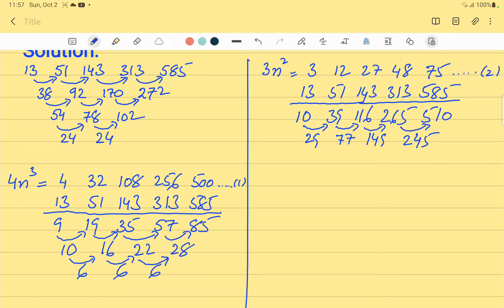It is evident that we have to find the differences one more time. So let's go for it. 77 minus 29 is 48. 149 minus 77 is 72. 245 minus 149 is 96.